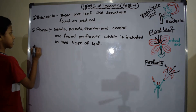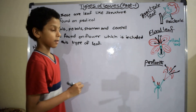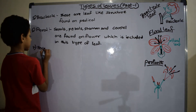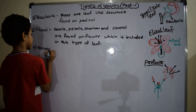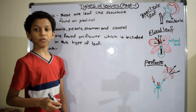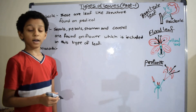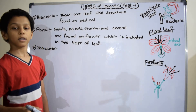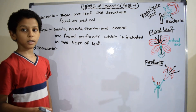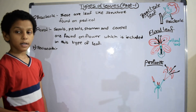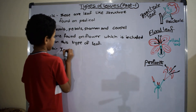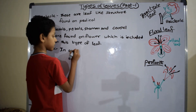Seventh one is perianth. In some flowers, calyx and corolla are not distinct and are termed as perianth, and the unit of perianth is called a tepal.